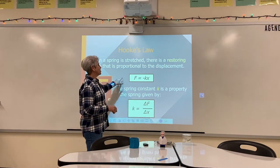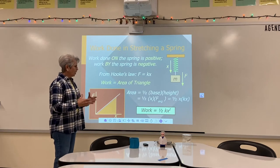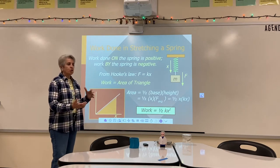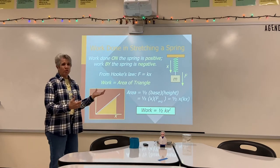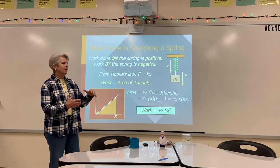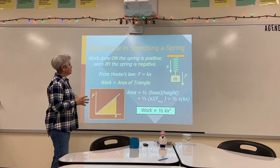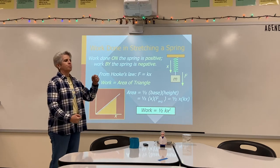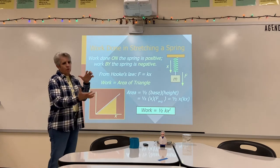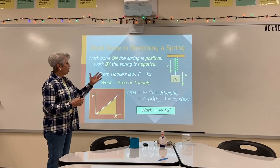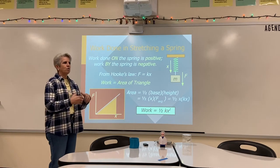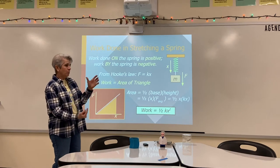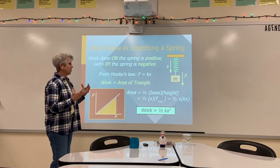When we do work to stretch a spring, you apply a force, it displaces, and the spring wants to pull back. That's the negative sign in Hooke's law: F equals negative K times X. This tells us that the force and the displacement are in opposite directions. But we have two different works: work that we're doing on the spring, and the work that the spring wants to do to pull back. Work done on the spring is considered positive work — our force is causing the displacement. Work done by the spring, pulling in the opposite direction, is considered negative work.